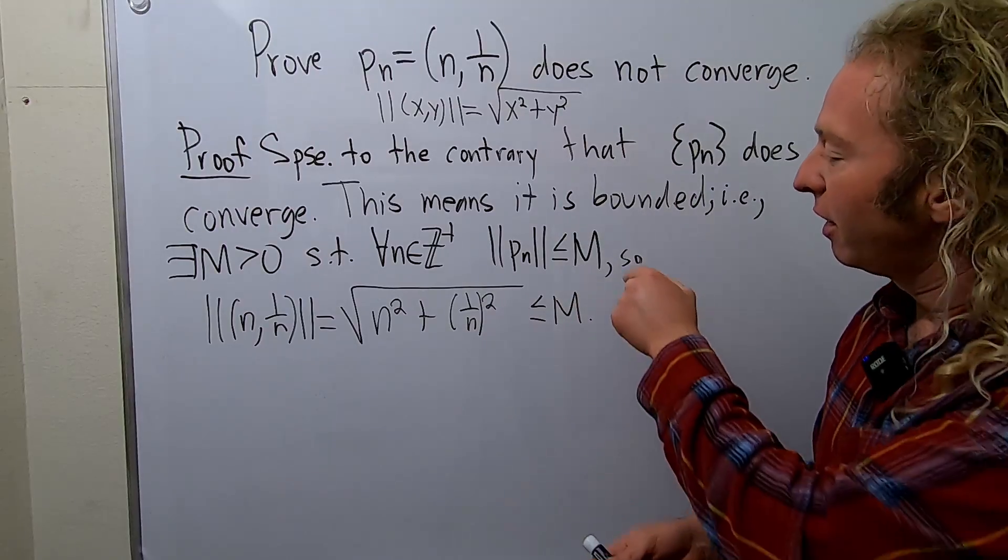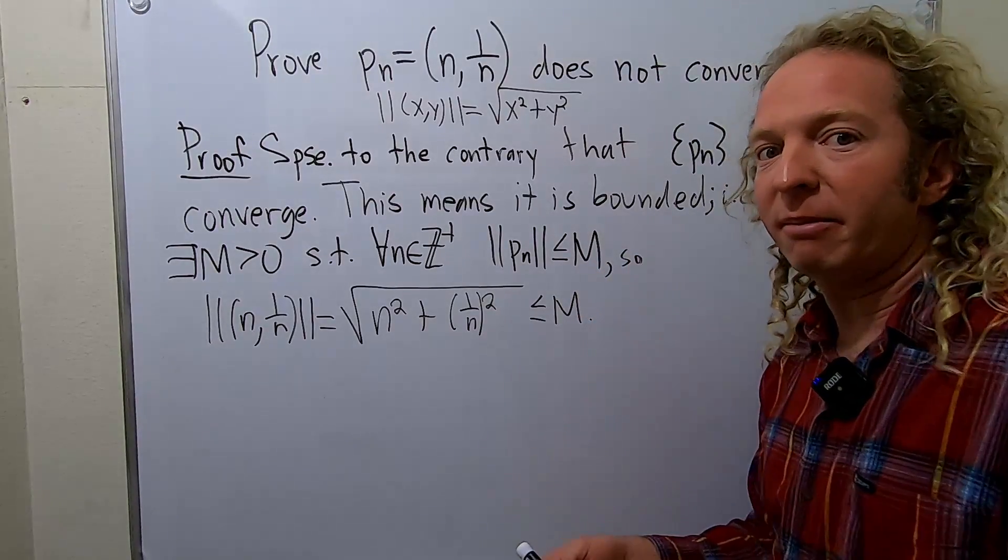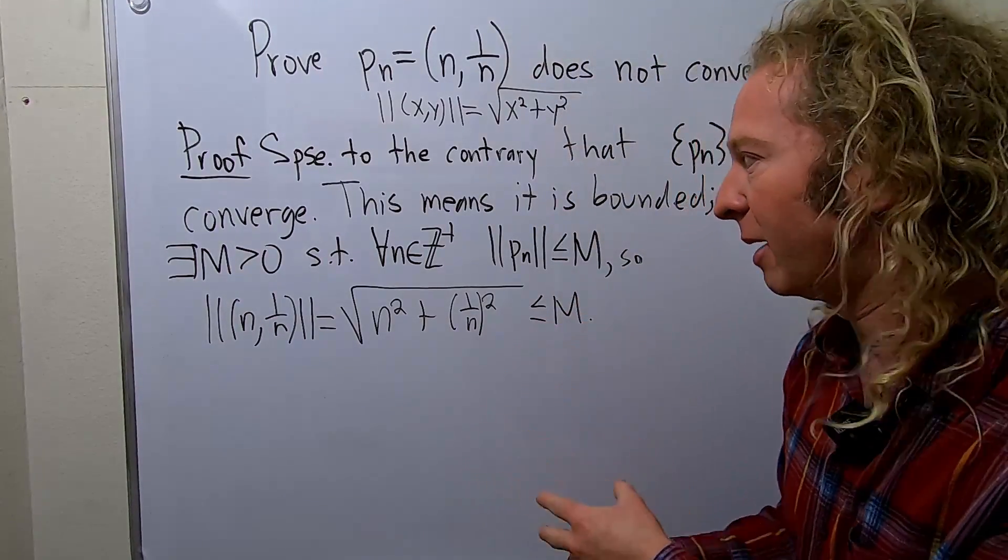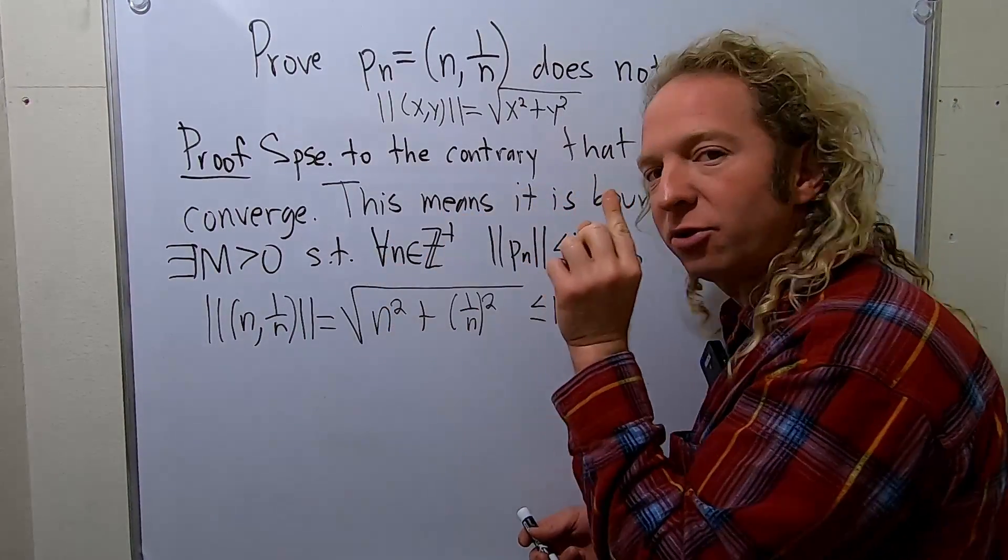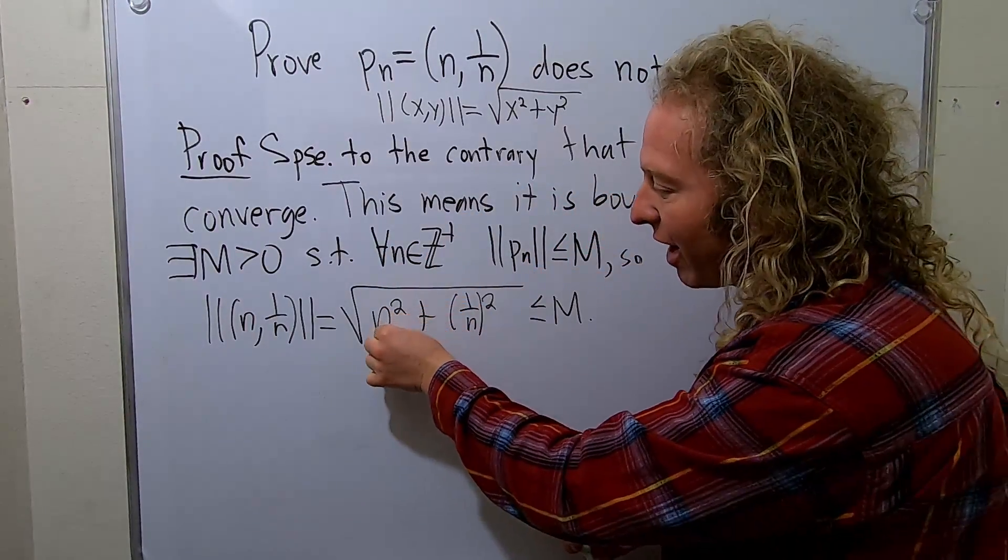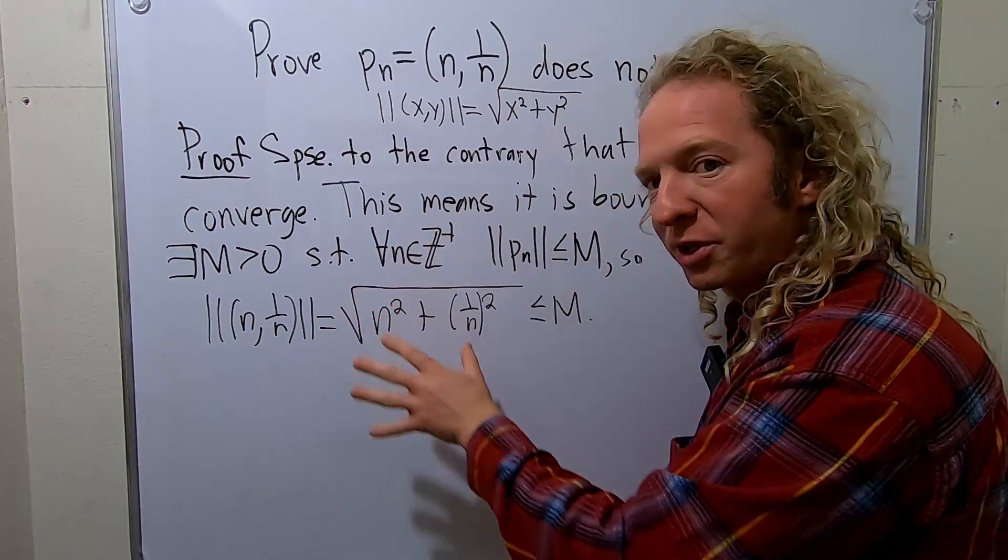Because I tried to think, okay, what's a number that's bigger than capital M? So I chose 2m. So 2 times capital M. Because this has to be true for all little n. So all you need to do is find one value of little n for which this fails.